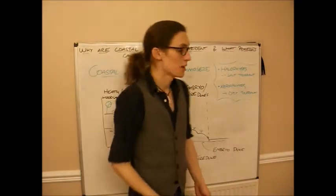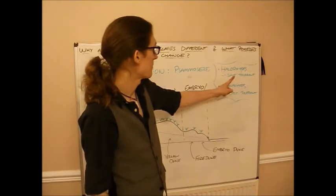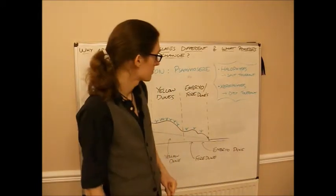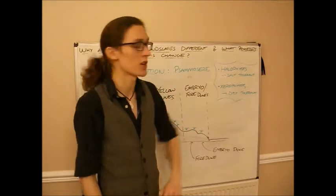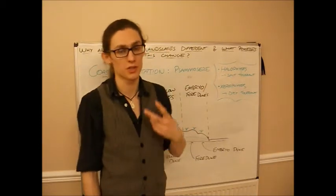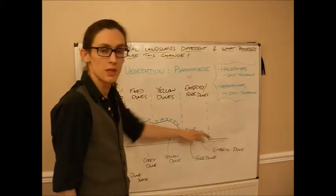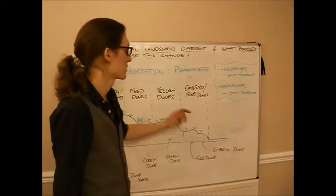Now samosias are made up of two types of plants, halophytes and xerophytes. Halophytes are salt tolerant, they can deal with being in salty conditions, and they tend to be in yellow and embryo slash fore dunes.